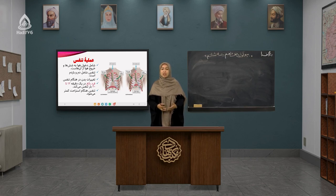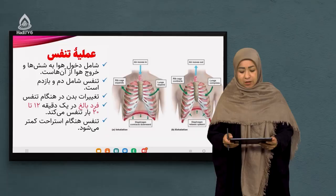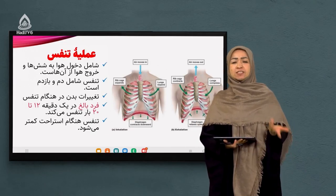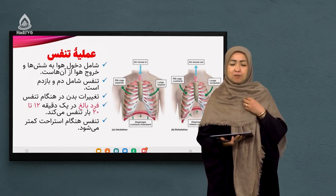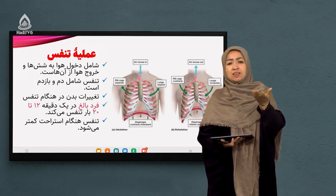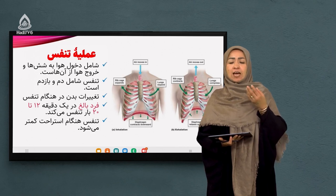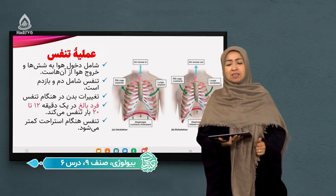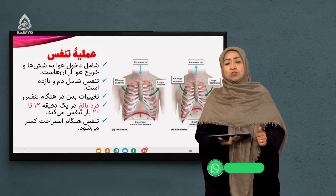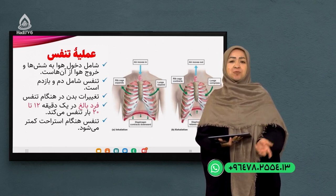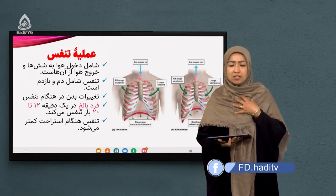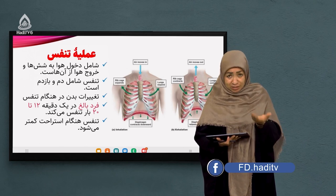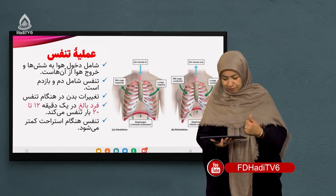امروز ما عملیه تنفس را میخوانیم - که چیست، چگونه انجام میشود و در چه جاهایی انجام میشود. عملیه تنفس یعنی گرفتن هوا یا اکسیژن و رساندن آنها به ریه‌ها و پس دادن کربن دی‌اکسید. دخول هوا به ریه‌ها و خروج هوا از ریه‌ها را عملیه تنفس میگویند. عملیه تنفس شامل دو بخش است: عمل دم و بازدم.